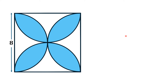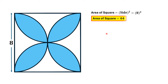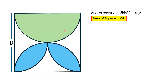First, we calculate the area of the square. We know that the area of a square is equal to the square of its side, and the side length is eight units. So the area of the square is equal to 64 square units.